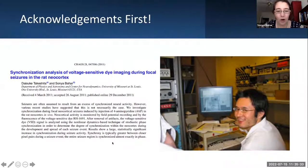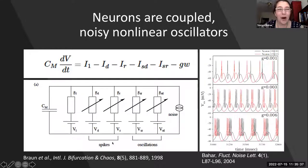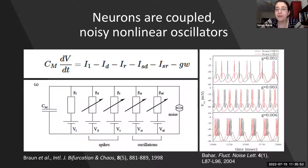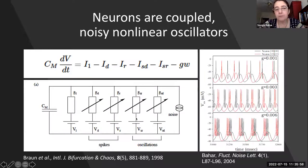He definitely gets all the credit for anything interesting in what I'm going to show. As most people in the audience probably know, neurons can be described as coupled noisy nonlinear oscillators — and so can cardiac cells. The action potential is a threshold-dependent process, and you can describe the dynamics of neural activity with differential equations, looking at the change in voltage as a function of currents.